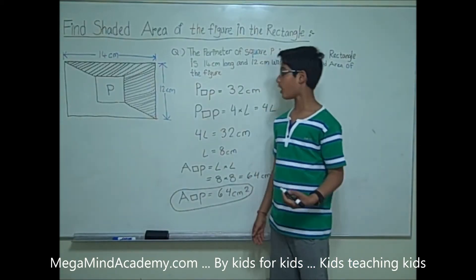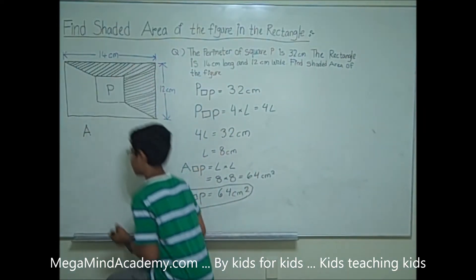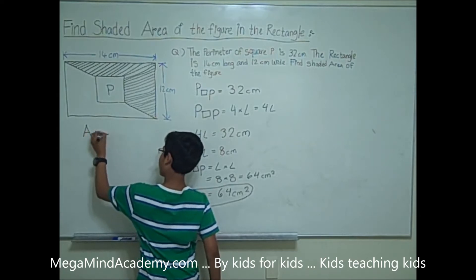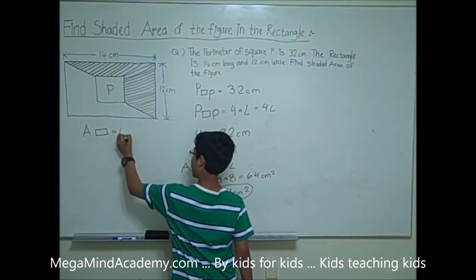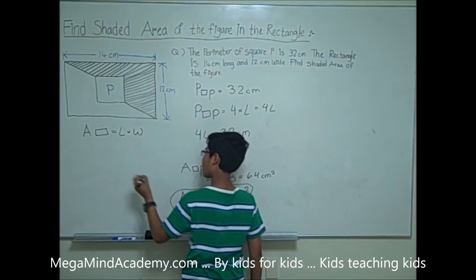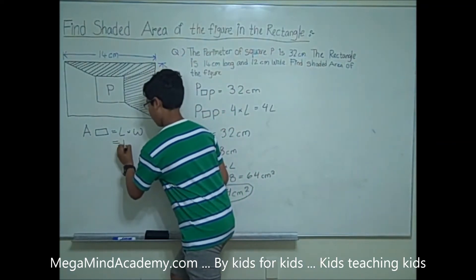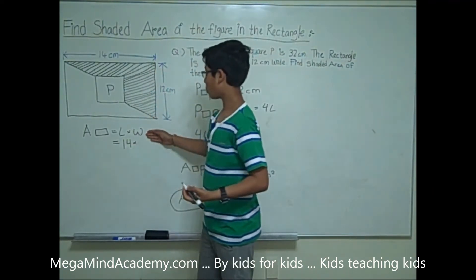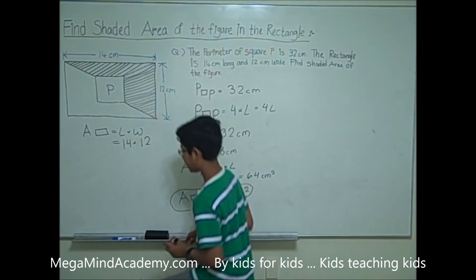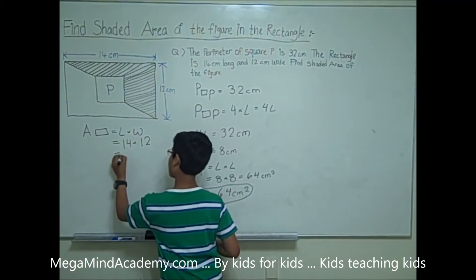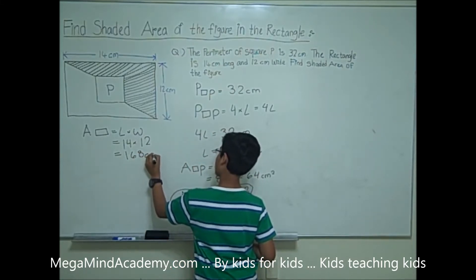Now let's find the area of the rectangle. The formula is: area of the rectangle equals length times width, which is 14 cm times 12 cm, equal to 168 cm squared.